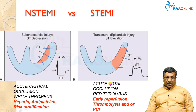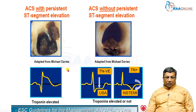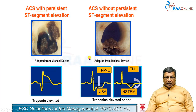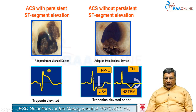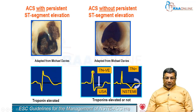In non-ST elevation ACS there is a white thrombus and partial occlusion, whereas ST elevation ACS is a total occlusion with red thrombus. ST elevation ACS is an indication for thrombolysis or primary PCI. For thrombolysis you must check for contraindications, and if there are none you can thrombolyze. Do not wait for troponin or any other test if the patient has classical ST elevation suggestive of sub-epicardial injury — thrombolyze or do primary PCI at the earliest if the ECG is very typical.